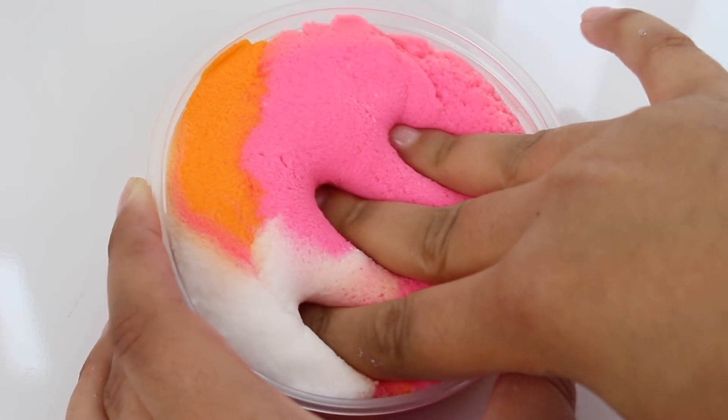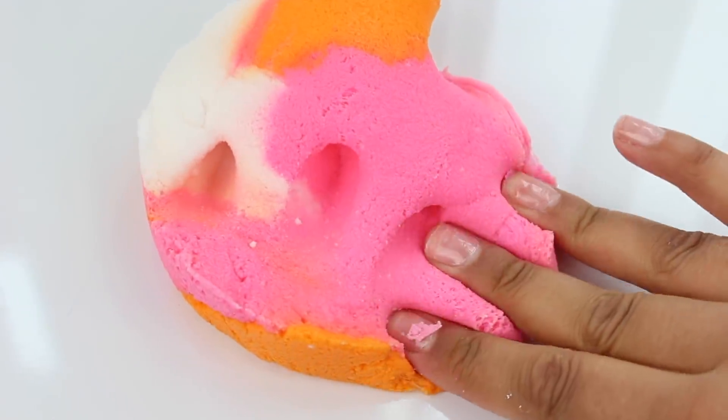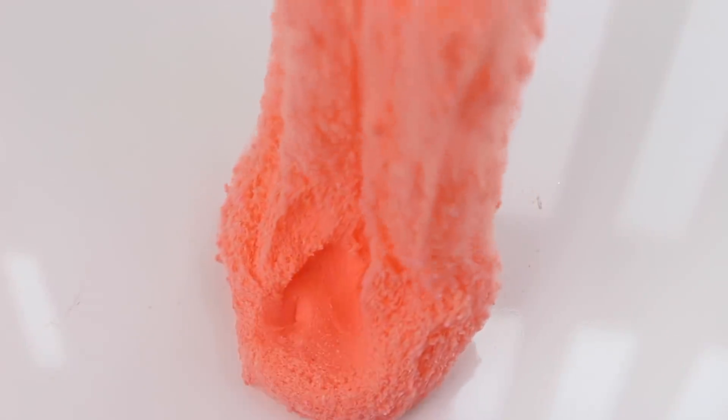You know we couldn't have a restock without rainbow sherbert. You guys know this is a really nice drizzly cloud slime scented exactly like the name. It usually comes with a jelly bean charm, but the charms that I order aren't available anymore. So I'm looking for some really cute ones. When I find them this will come with a jelly bean charm, but until then it will not.